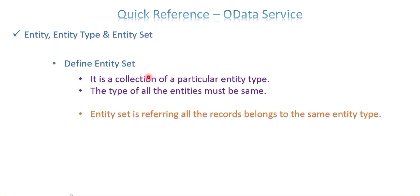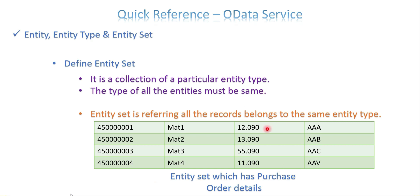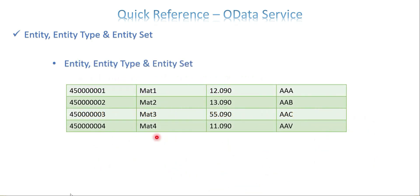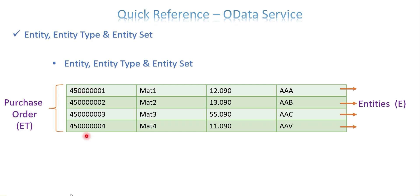Entity set is a collection of entities. It's a collection of a particular entity type, and the type of all entities must be the same. At the OData level, entity set refers to all records belonging to the same entity type. In the previous example, this entire table is one entity set — it belongs to purchase order. Entity set technically returns more than one record — a collection of records. So to summarize: each row is an entity; entity type determines the category; and the collection of entities forms the entity set.